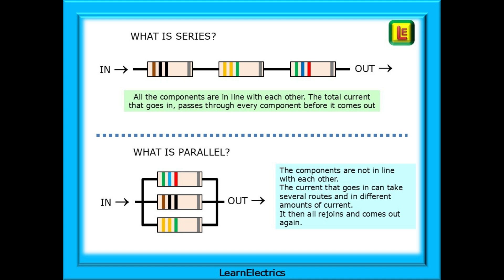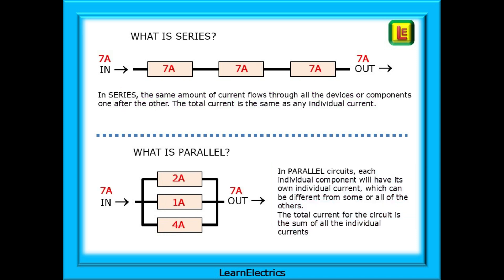First of all, what is the difference between series and parallel? Most people associate this with resistors, but in fact both series and parallel crops up in many places in electrics, as we shall see. In a series circuit, all the components are in line with each other. The total current that goes in passes through every component before it comes out. In a parallel circuit, the components are not in line with each other. They are next to each other. The current that goes in can take several routes and in different amounts of current. It then all rejoins and comes out again. In both circuits, what goes in comes out. It's what happens in between that defines the difference.